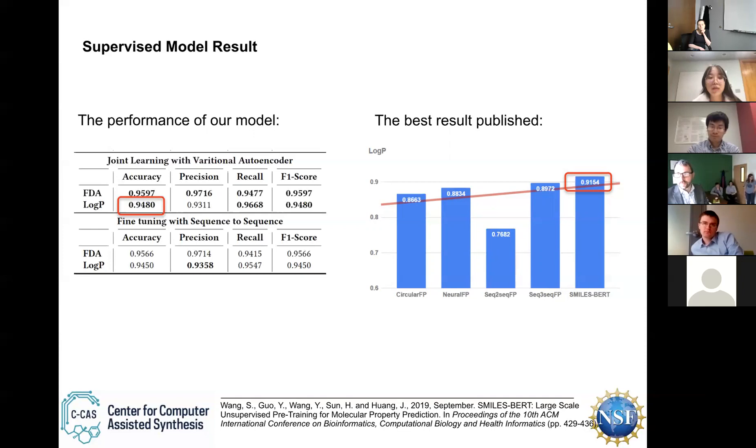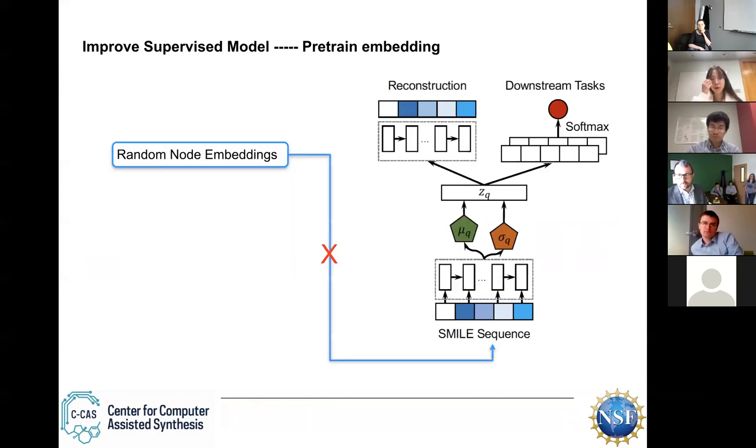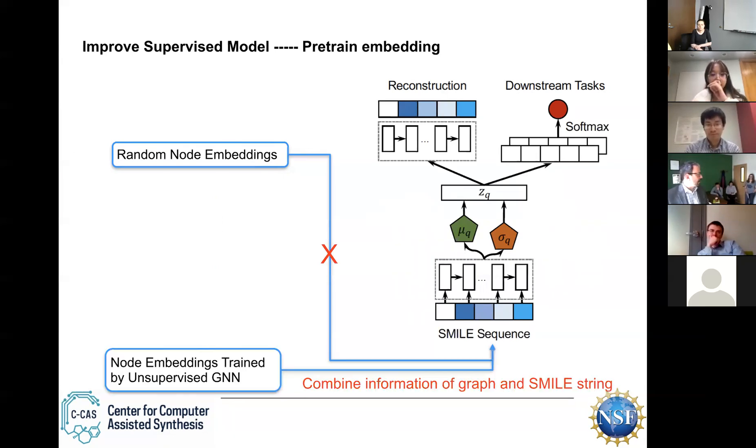And we also continue to improve the model. The first step we do is to pre-train the embedding. In this model, we give each node an initial embedding randomly and put this initial embedding to this model to train. But in this method, we cannot make use of the graph information. So we want to combine the information both of graph and the strings. So we want to pre-train the embeddings using the unsupervised GNN to train. And after trained, we put the trained embeddings to this model to train. In this way, we can combine information both of graph and the SMILES strings. And this indeed improve about 1% in the performance.